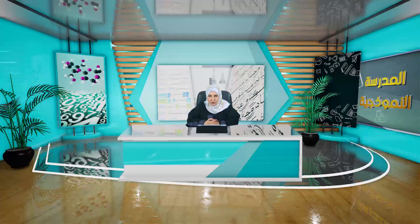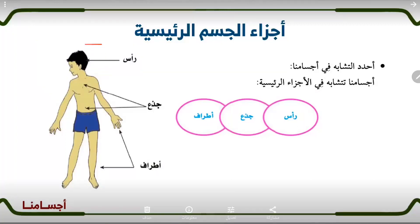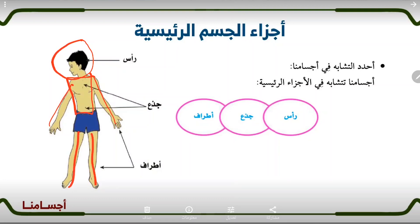سوف نتكلم في هذا الدرس عن جسم الإنسان. أجزاء جسم الإنسان كما نرى في الصورة هي: رأس، وجذع، وأطراف. والأطراف هما يدان ورجلان.